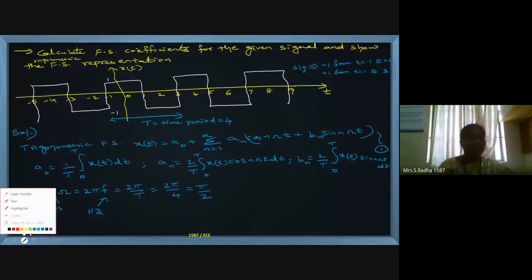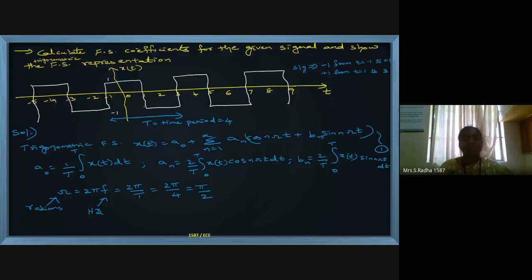From the diagram, the height is +1 from time minus one to plus one, and the height is negative for time one to three. We have to calculate the Fourier series coefficients and give the Fourier series representation using equation one.